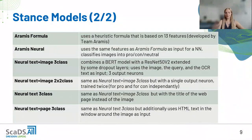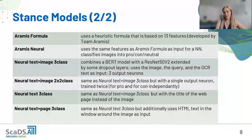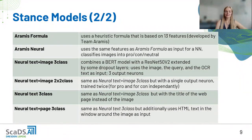The second best-performing group at the Touche Lab was Aramis. They developed a formula model and a neural model. The formula model uses a heuristic formula based on 13 features derived from assumptions, and the neural model uses those same features as input to a neural network that classifies images into pro, con, or neutral — with neutral images being discarded.